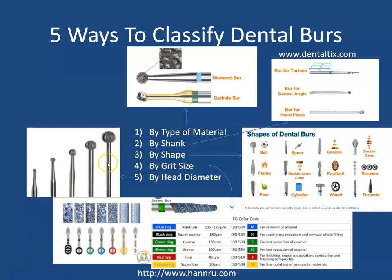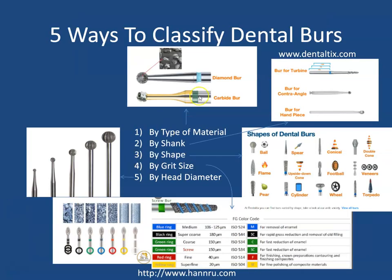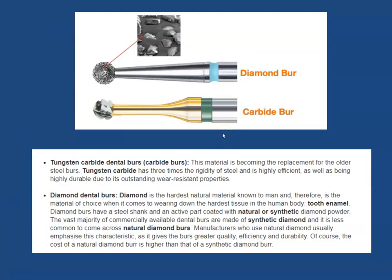Lastly, burrs are classified by head diameter, whether it's small or large. Looking at the first classification by material, burrs can be made out of carbide — specifically tungsten carbide — which is becoming the replacement for older steel burrs. Tungsten carbide has three times the rigidity of steel, better wear resistance, and is very durable.